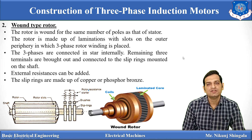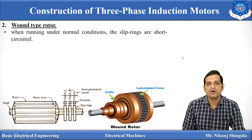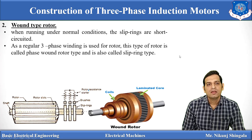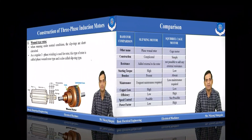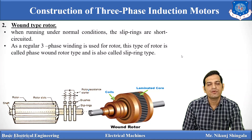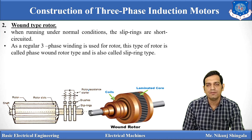When the rotor starts and reaches normal running condition, the slip rings are short-circuited. Because a three-phase regular winding is used for the rotor, it is also known as a phase-wound type of rotor, and also as a slip ring type rotor. This type of rotor provides high starting torque, so it is used in elevators and compressors.